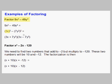49y⁴ is 7y² times 7y², so this is (7y²)².